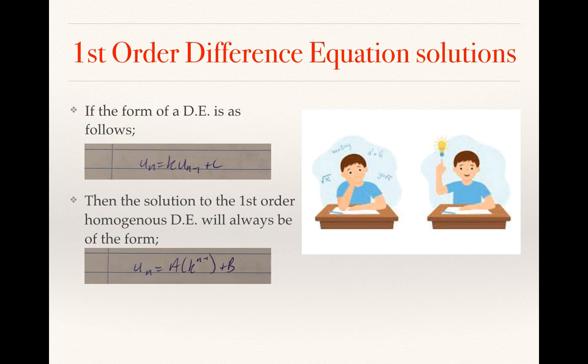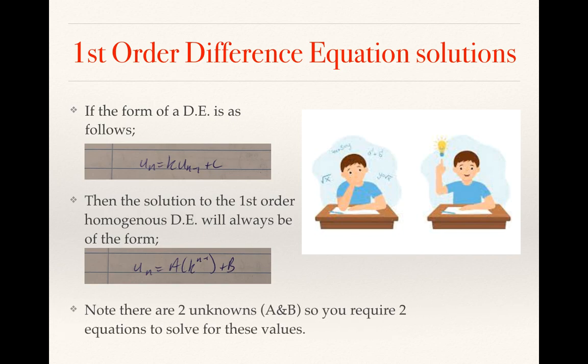I suppose the thing to remember here is there are two unknowns, a and b. So if there are two unknowns, you need two equations. And if there are two equations, you need two numerical values to complete the question.